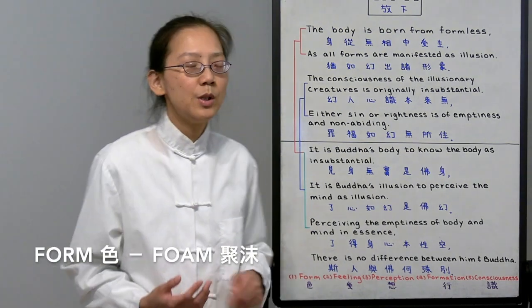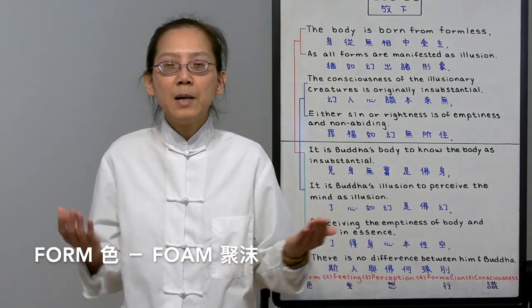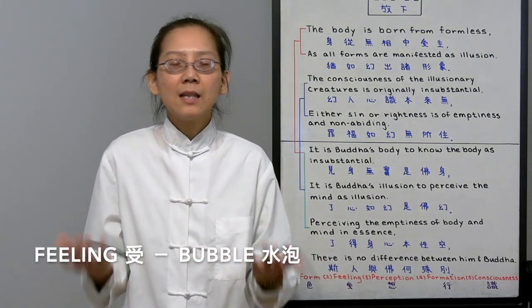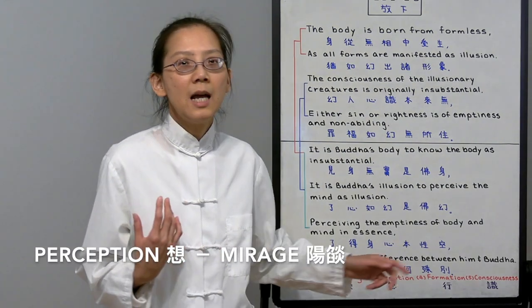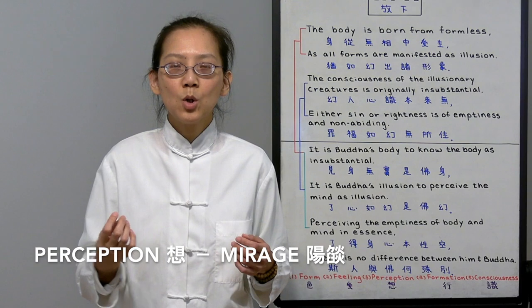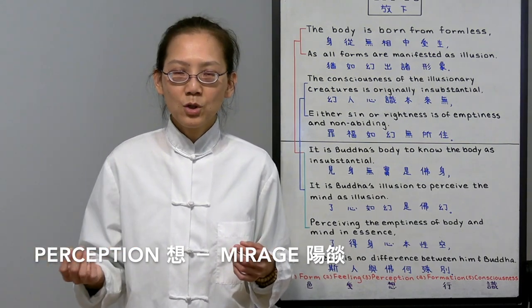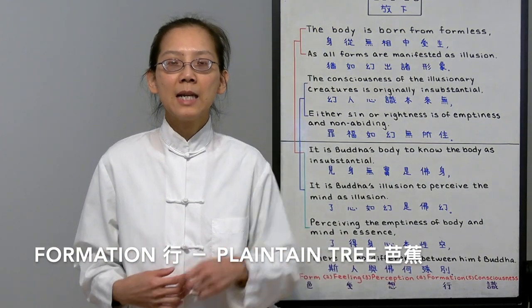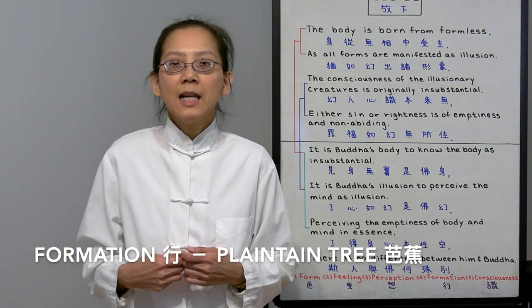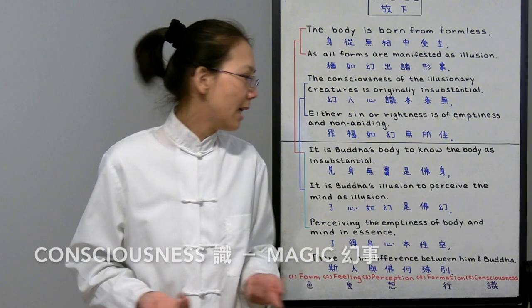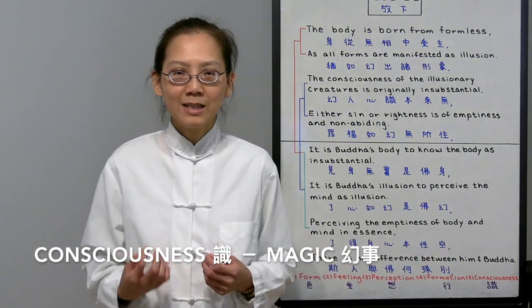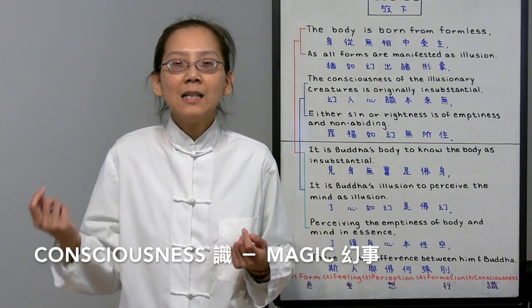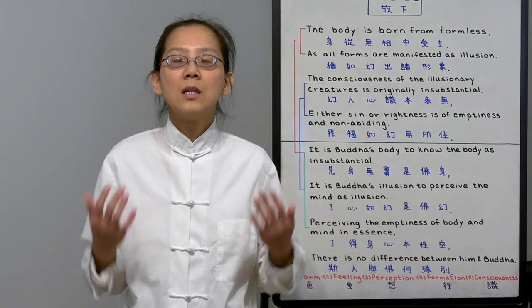For our form, we should look at it like foam, a mass of bubbles. It doesn't really keep its shape. We should look at our feelings like bubbles. It doesn't last at all. Look at our perceptions like a mirage. It's actually an optical illusion from the reflection of light. And we should see our mental formation like the plantain tree. When you take out all the leaves of the plantain tree, it actually doesn't have a core remaining. And we should see our consciousness as the magician pulling a rabbit out of the hat. It's actually an illusion by sleight of hand. So all these are just illusions.